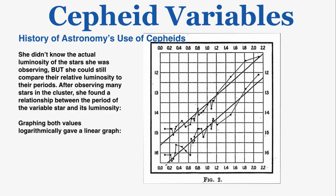After observing many stars in the cluster, she found a relationship between the period of a variable star and its luminosity. When both values were graphed logarithmically, a linear graph resulted with a clear, predictable line. The graph she published shows maximum brightness and minimum brightness of Cepheid variables on the y-axis, and the logarithm of the period in days on the x-axis.